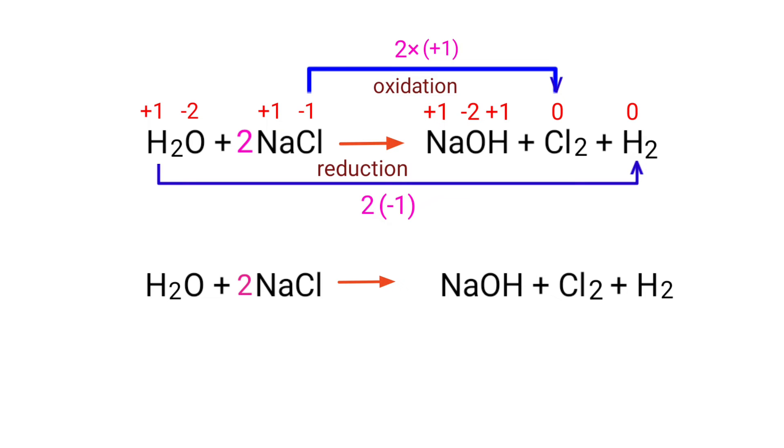Now you can balance the number of atoms in this equation. In the reactants side there are 2 hydrogen atoms, 1 oxygen atom, 2 sodium atoms and 2 chlorine atoms present. And the products side there are 3 hydrogen atoms, 1 oxygen atom, 1 sodium atom and 2 chlorine atoms present.